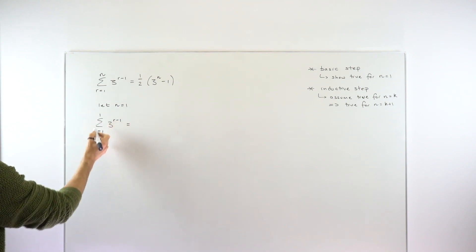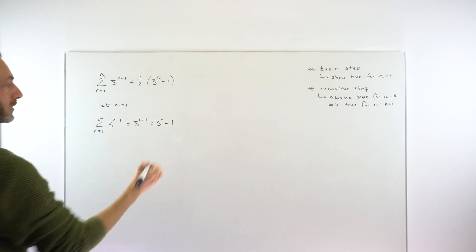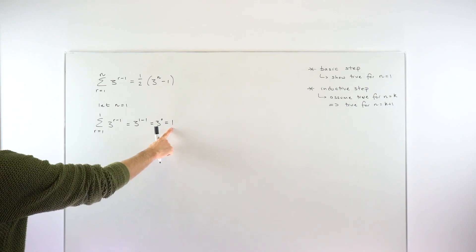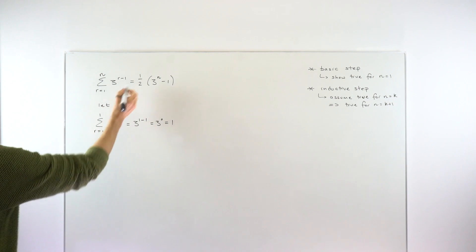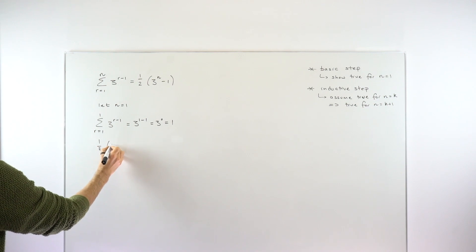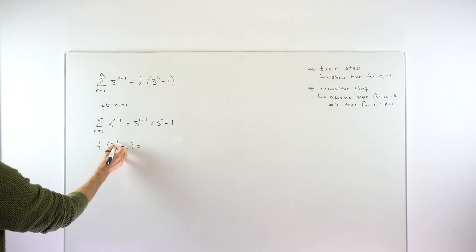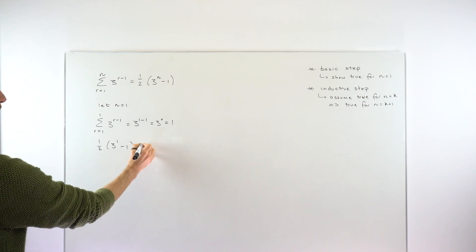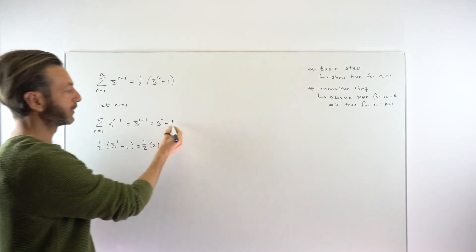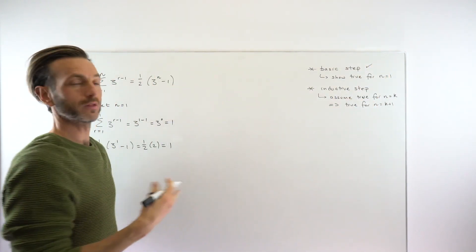There is only one r value here, which is 1, so that's going to be 3 to the power of 1 minus 1, which is 3 to the power of 0. Anything to the power of 0 equals 1 from exponent rules, so that comes out to be 1. We check the right-hand side by putting n equals 1: that gives us one half times (3 to the power of 1 minus 1). 3 minus 1 is 2, so one half times 2 is 1. Those are equal, so we can sign off on the basic step.